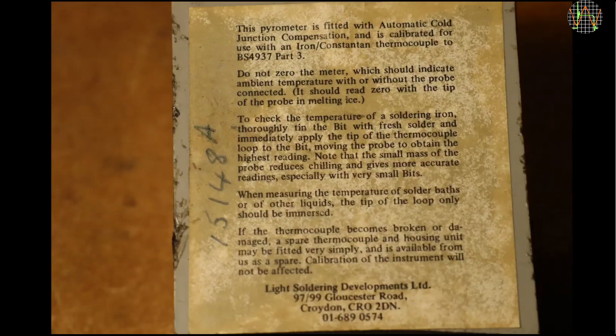The writing on the back provides some useful information. The thermocouple is an iron-constantan type, also known as type J, and there is apparently a cold junction compensation.